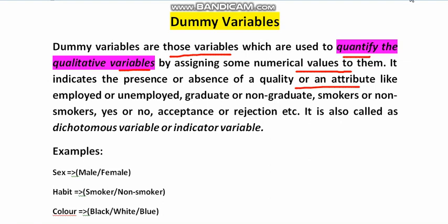Dummy variables are those variables which are used to quantify qualitative variables by assigning numerical values to them. They indicate the presence or absence of a quality or attribute, for example: employed or unemployed, graduate or non-graduate, smoker or non-smoker, yes or no, acceptance or rejection.